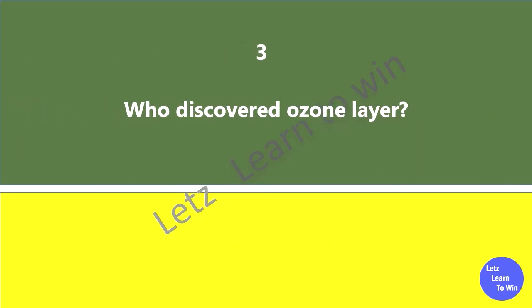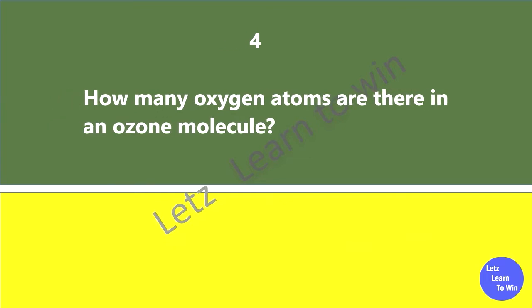Who discovered ozone layer? Henry Buisson and Charles Fabry. How many oxygen atoms are there in an ozone molecule? Three.